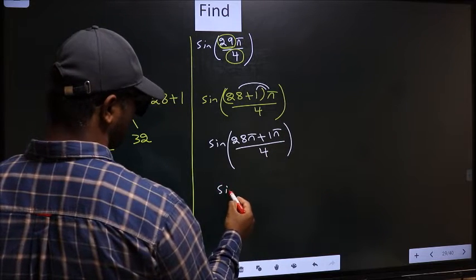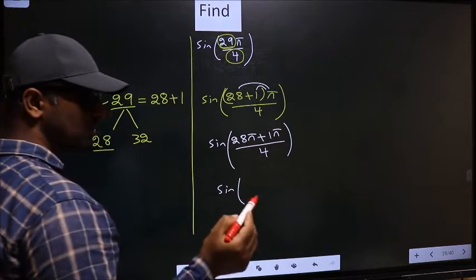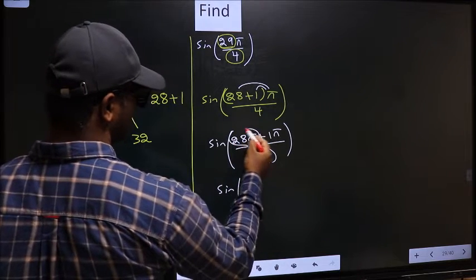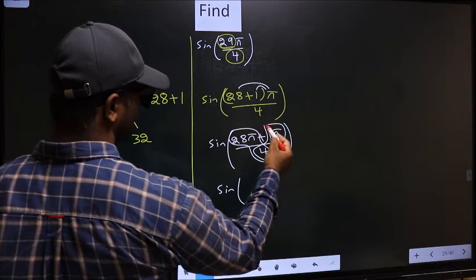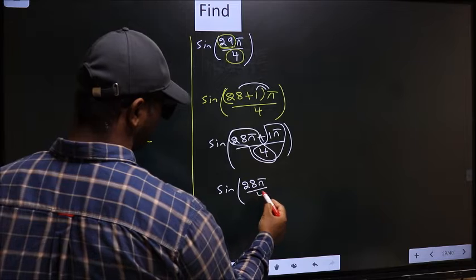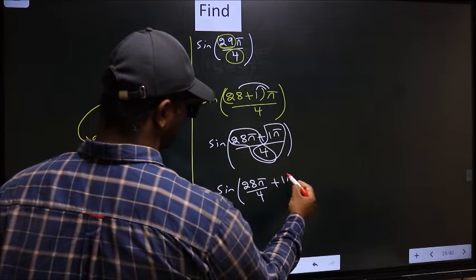Next, sine of—now you should split the denominator in this way: that is 28π/4 plus 1π/4.